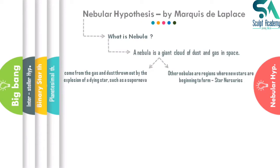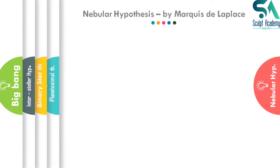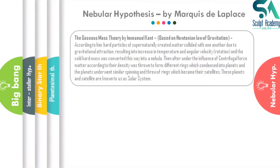When a star dies, it produces an explosion in space known as a supernova, and the dust and gas thrown out forms a cloud known as a nebula. Another type of nebula is associated with the birth of a new star, and hence these are known as star nurseries. So a nebula can be related to either a dying star or a newly forming star.